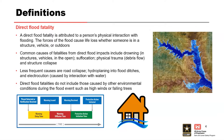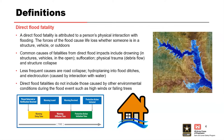Direct flood fatalities do not include those caused by other environmental conditions — that's an important takeaway. So if a tree falls on you, or high winds associated with a hurricane, those we don't count as direct flood fatalities. Indirect flood fatalities is a harder thing to assess. We've been estimating direct flood fatalities for 10 to 15 years, heavily refining that method over the last 5 to 10 years, and that's what's got us to LifeSim 2.0. We're really just at the beginning of this indirect life loss work.